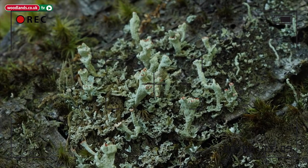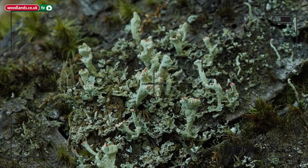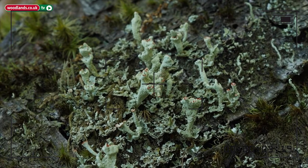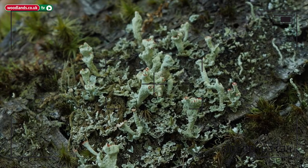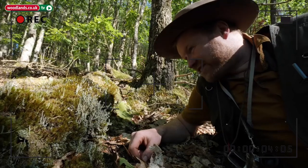These are called podetia, these bits that grow upwards from the substrate and on the tops of the podetia there are these little brown blobs, these are called the apothecia and these are the fruiting bodies which produce the spores from which the lichen fungus reproduces. It's incredibly beautiful.